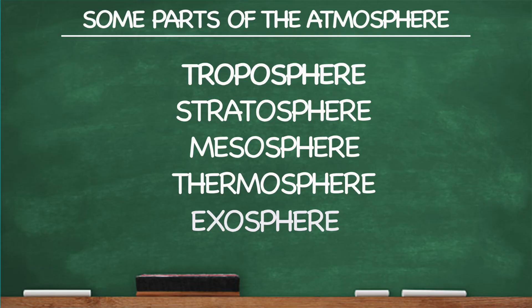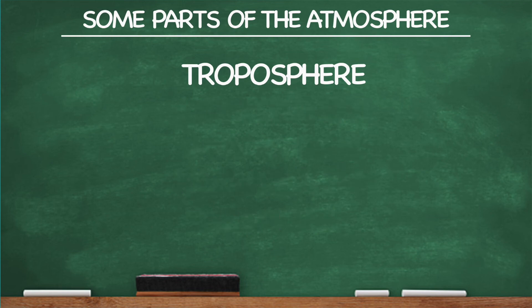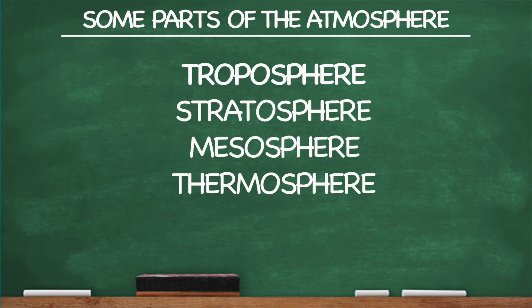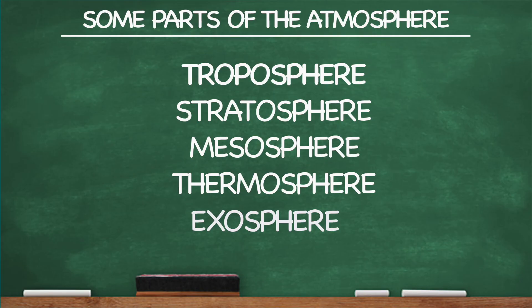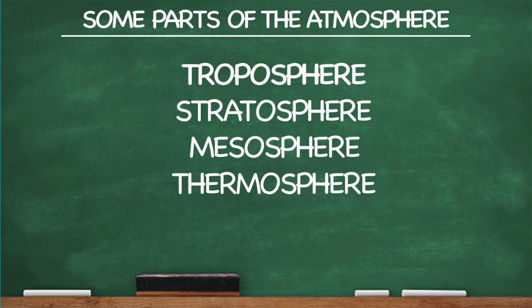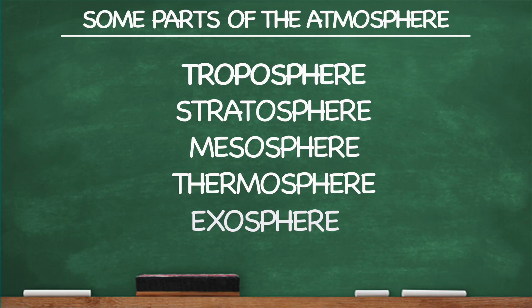Those are hard words to say all in a row like that. I think we can do it though, so let's try it one more time. What are some parts of the atmosphere? Troposphere, stratosphere, mesosphere, thermosphere, and exosphere. Troposphere, stratosphere, mesosphere, thermosphere, and exosphere. See ya.